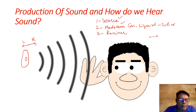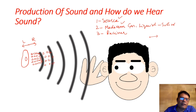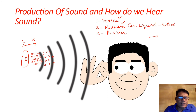When the vibration takes place, we hear the sound. When the diaphragm of the speaker moves right, it compresses the molecules of the air and they come very close to each other. When the diaphragm moves away, towards the left, this pressure is reduced and the molecules become a little bit apart from each other.